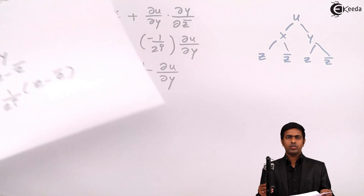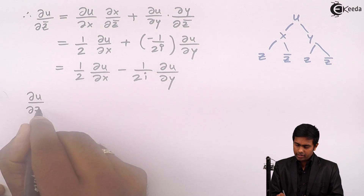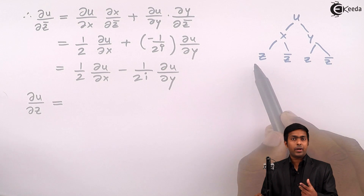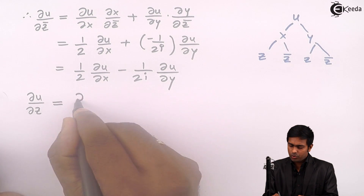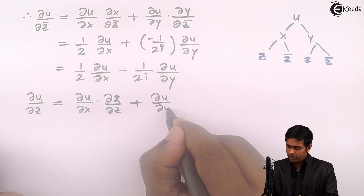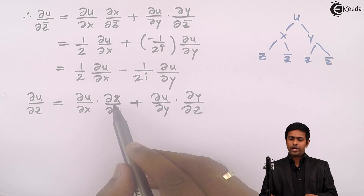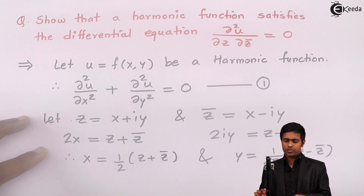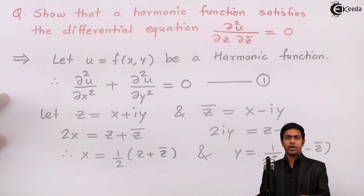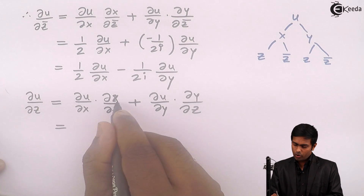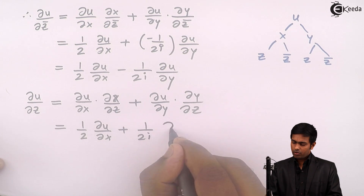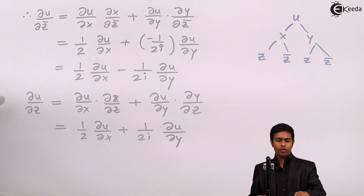Now let us find ∂u/∂z. Applying the chain rule again using the composite function: ∂u/∂z = (∂u/∂x)(∂x/∂z) + (∂u/∂y)(∂y/∂z). Differentiating x = (z + z̄)/2 with respect to z gives ∂x/∂z = 1/2. Differentiating y = (z - z̄)/2i with respect to z gives ∂y/∂z = 1/2i. Therefore, ∂u/∂z = (1/2)(∂u/∂x) + (1/2i)(∂u/∂y). This is equation number 3.